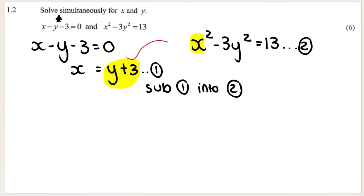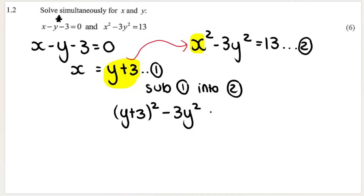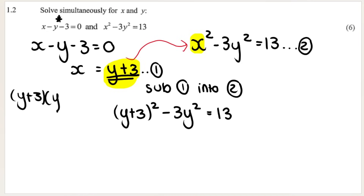We now substitute our first equation into our second equation. Since x equals y plus 3, everywhere we see x in the second equation we substitute y plus 3. So it becomes (y plus 3) squared minus 3y squared minus 13. We need to simplify this properly, writing the bracket out twice if needed and using the FOIL method.